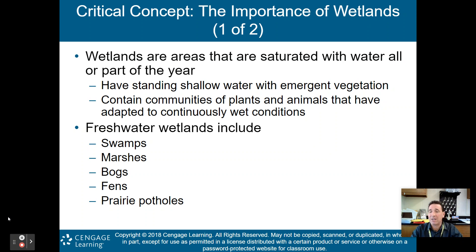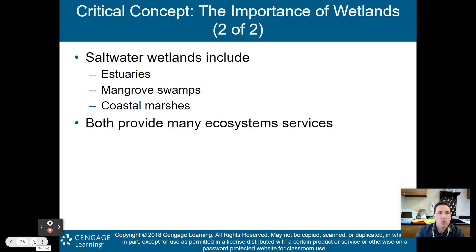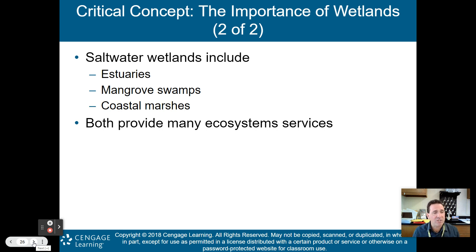Freshwater wetlands include swamps, marshes, bogs, fens, and prairie potholes. Saltwater wetlands include estuaries, mangrove swamps, and coastal marshes. We'll talk more about freshwater wetlands in part two.